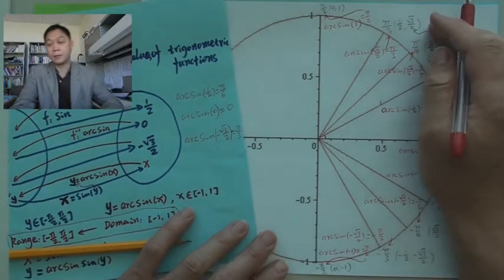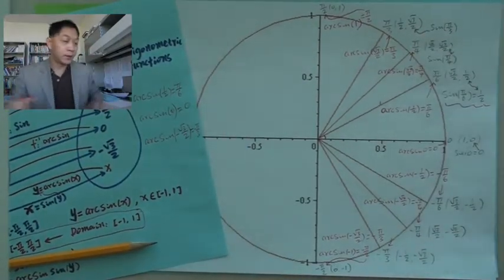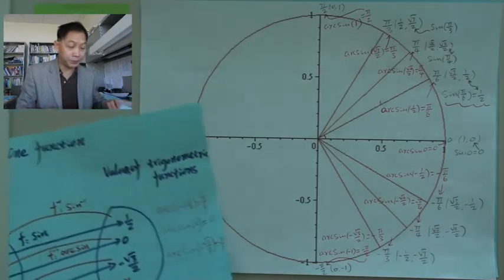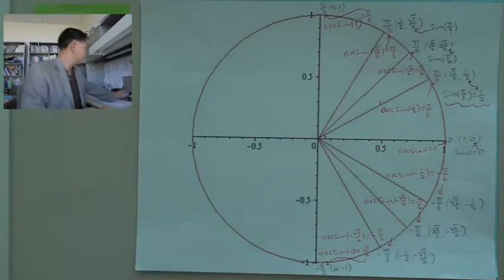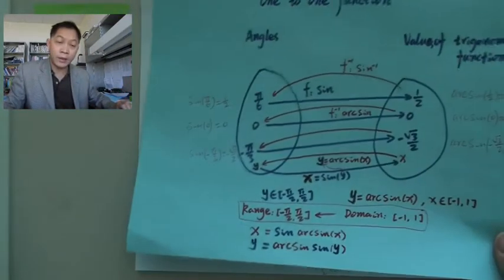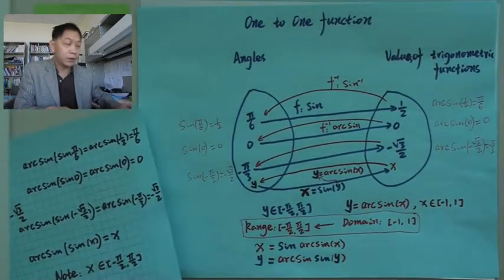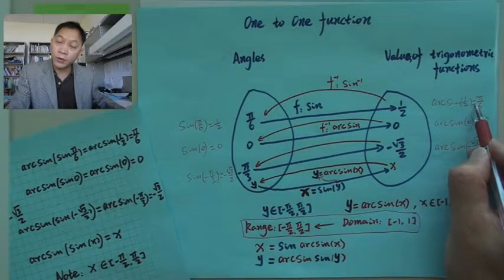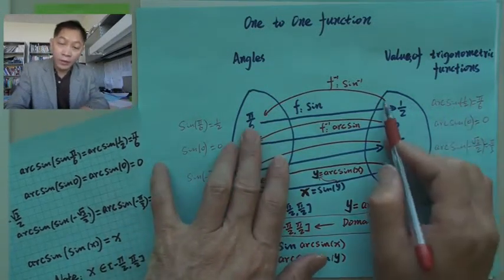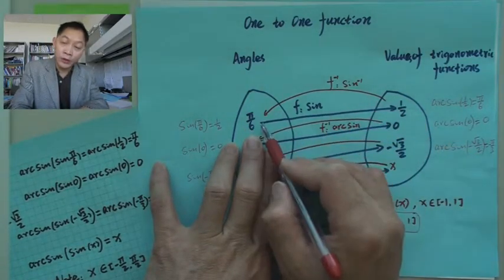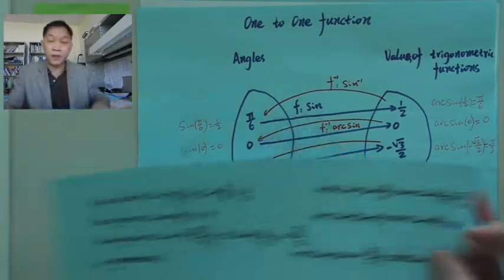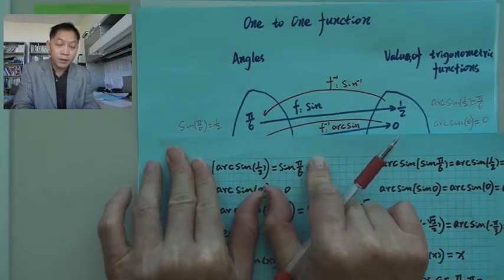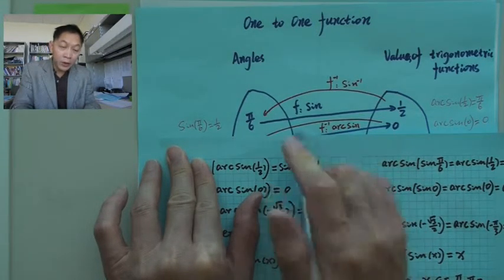Arc sine(1) = π/2. So arc sine always gives you an angle — arc something always gives you an angle. All those values are right here on the diagram. Now, look at this again: arc sine(1/2) goes to π/6, so it's basically the red arrow from 1/2 going to π/6.